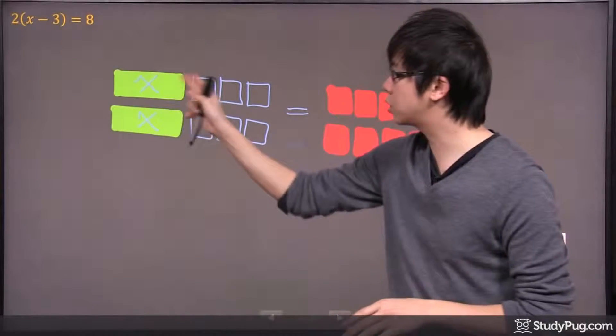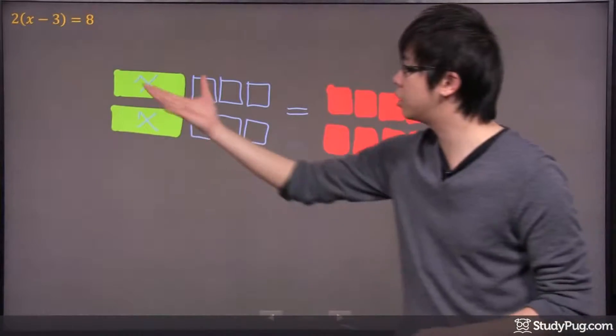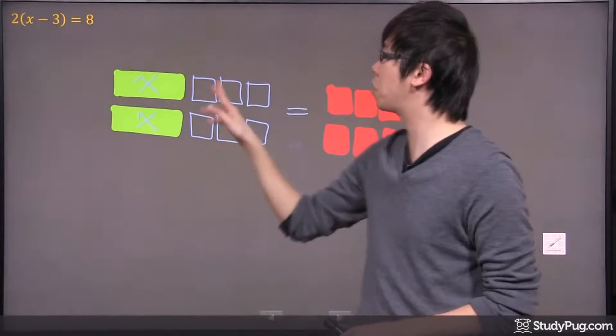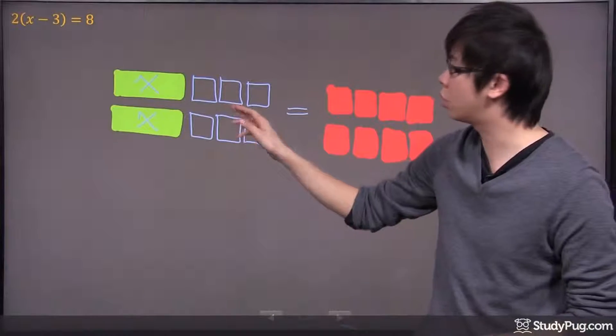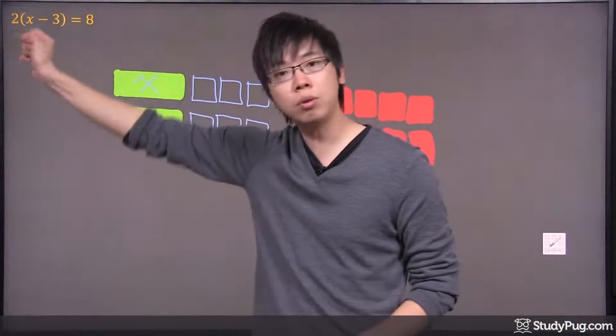It's two sets of x minus three. And once again, the x in the algebra tiles is a longer piece. It's shaded in because it's positive. The minus three is represented by the empty boxes over here. So, we got x minus three. We got one set and two sets because there's two in the front.